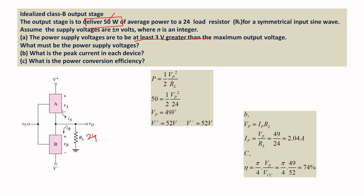The formula is P = (1/2) × VP² / RL, where VP is the peak voltage. Substituting 50 watts and 24 ohms: 50 = (1/2) × VP² / 24. Rearranging gives VP = 49 volts as the peak voltage. Since the supply must be at least 3 volts greater than the maximum voltage, we add 3: the supply voltage is 52 volts.